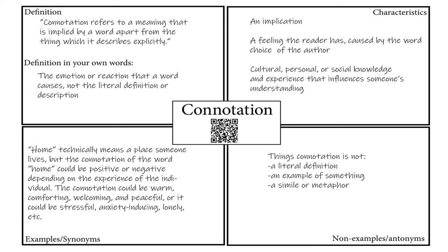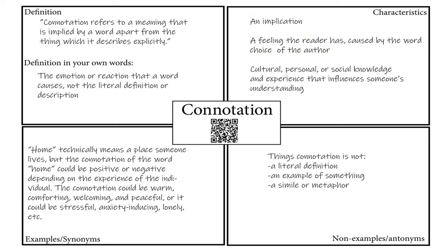From there we move on to characteristics. We want students to write down as many characteristics of the word as they can think of. The characteristics written here for connotation are: it can be an implication, a feeling the reader has caused by the word choice of the author, and cultural, personal, or social knowledge and experience that influences someone's understanding. By writing down as many characteristics as they can think of, students are building on the definition they started with in the first quadrant.